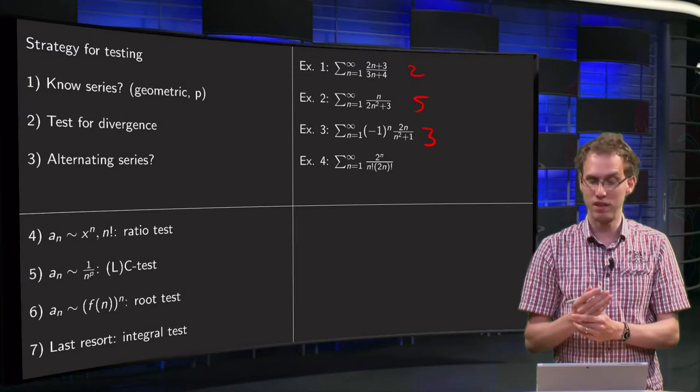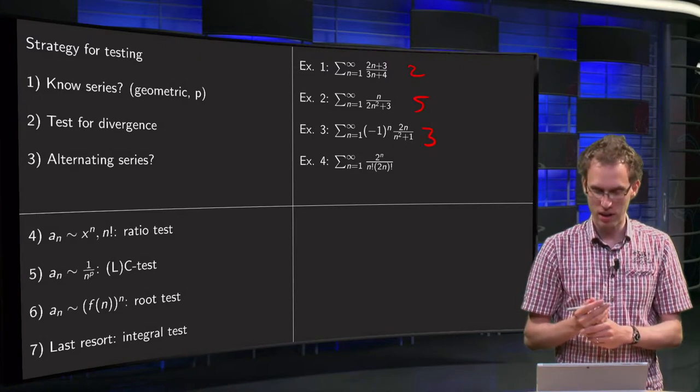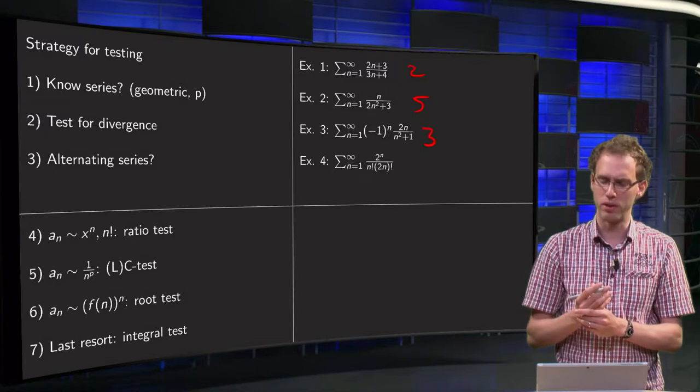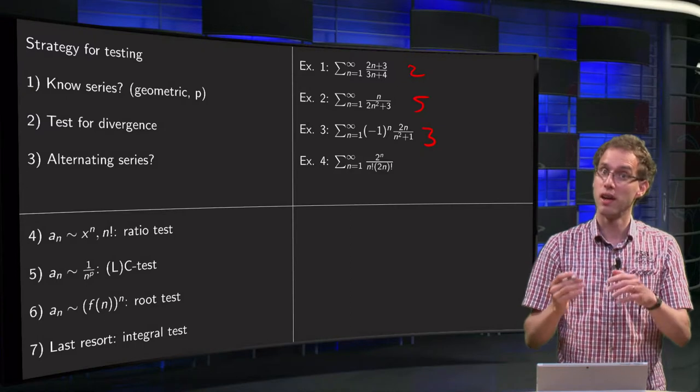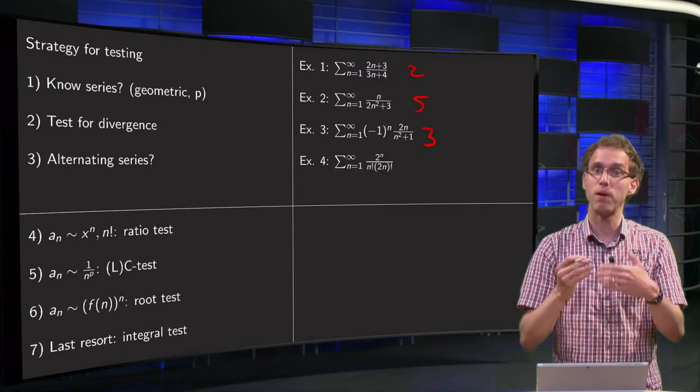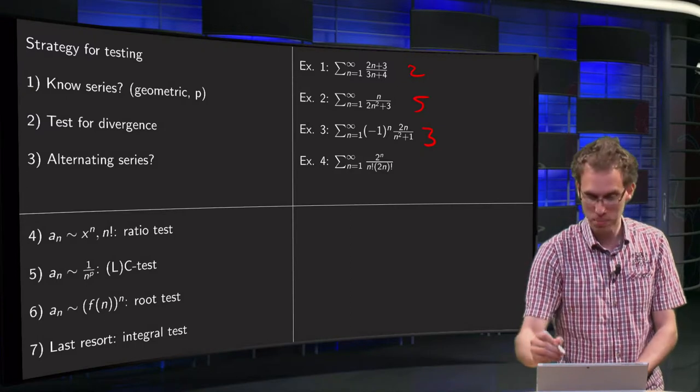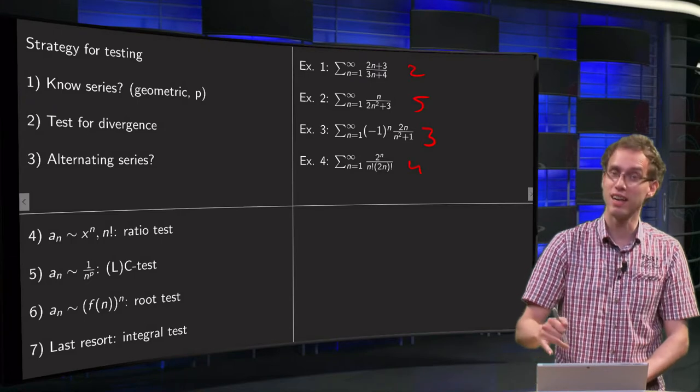Example 4, well definitely not known. n to infinity, well that is kind of difficult to see, not alternating, but you see 2 to the power n powers, you see factorials, so typically 4 try the ratio test over here.